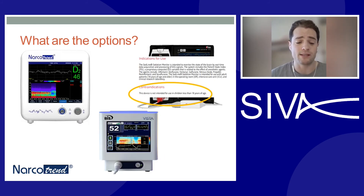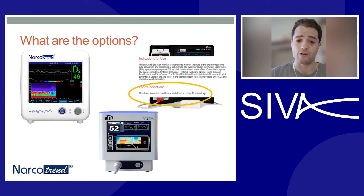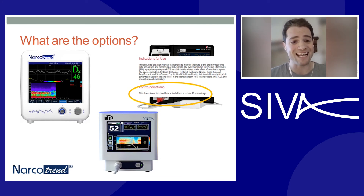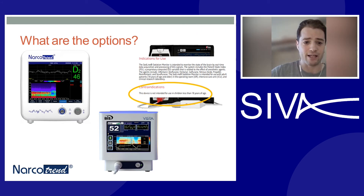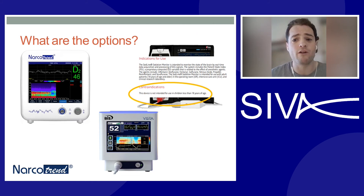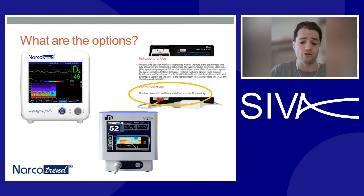What are the options for processed EEG monitoring in children in the UK? Fundamentally, you have three choices: the Narcotrend, the BIS monitor delivered by Medtronic, and the SED Line via the Masimo route. The SED Line — taken directly from their manual — states that the device is not intended for use in children less than 18 years of age, and the sticker itself is very large and hard to apply. That functionally leaves two options: the BIS and the Narcotrend.